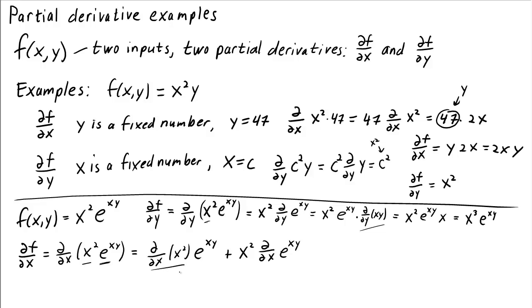d dx of x squared is 2x. So we get 2x times e to the xy. Here we need to use the chain rule again, this time using the derivative with respect to x.